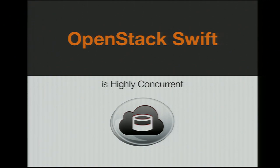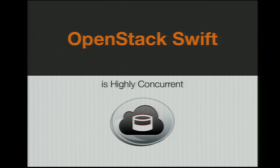Swift is highly concurrent. It is designed with zero shared knowledge in the system. There is no single point of failure. You can continually add to Swift and it is horizontally scalable. It's optimized not for single-stream throughput, but rather you can do 10,000 streams at once or however many you need. This is reflective of Swift being built for a large public service provider.